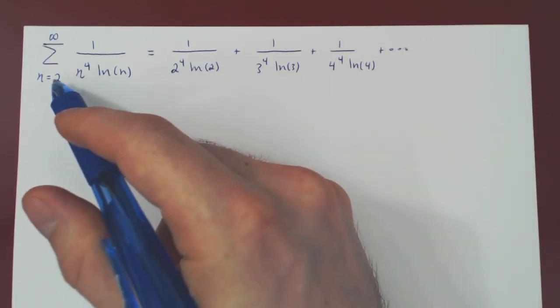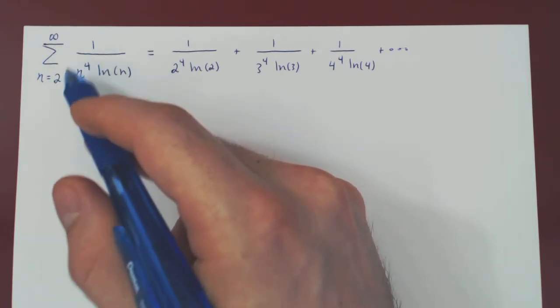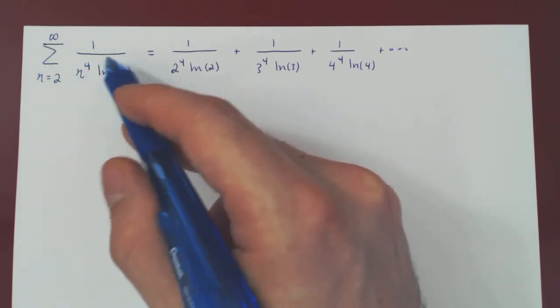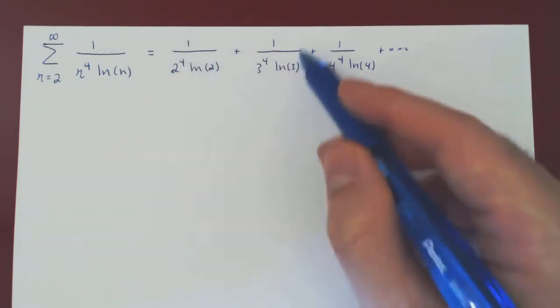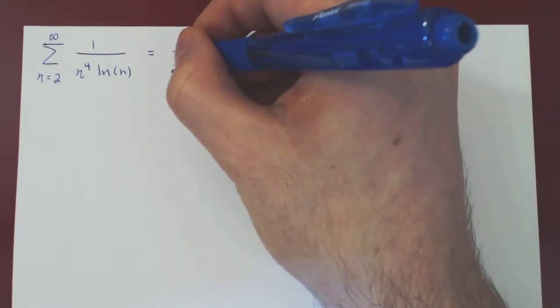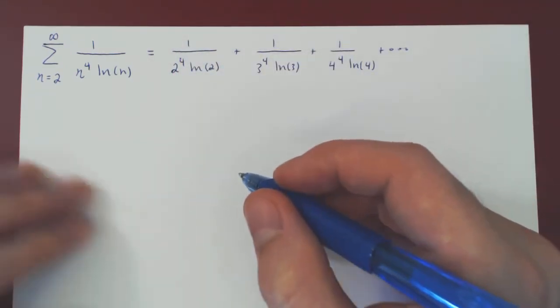So when n is larger than 2, n to the 4 is clearly positive, ln of n is clearly positive, so we are summing positive terms, which is why we can at least attempt to use the comparison test.